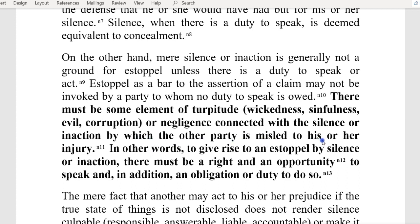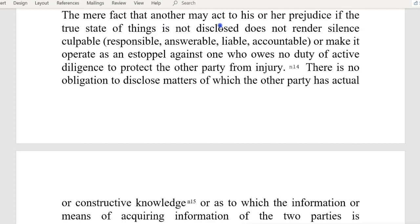There must be some element of turpitude — corruption or negligence — connected with the silence or inaction by which the other party is misled to their injury. Have you been injured by these people? You're damn right you have. To give rise to an estoppel by silence, there must be a right and an opportunity to speak and, in addition, an obligation or duty to do so. The mere fact that another may act to their prejudice if the true state of things is not disclosed does not render silence culpable — meaning responsible, answerable, liable, or accountable.